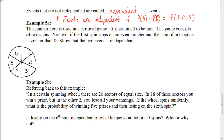It's important to know that events are independent if the probability of A times the probability of B equals the probability of the intersection of A and B. Events that are not independent are called dependent events.